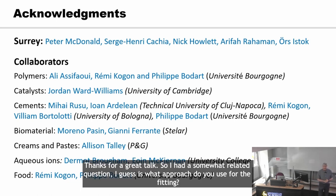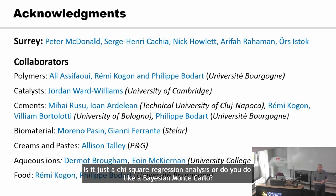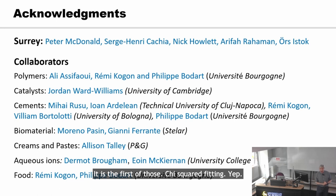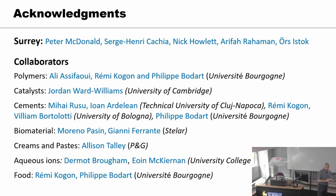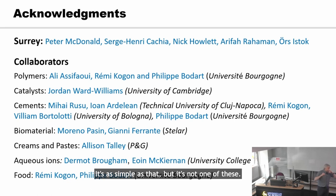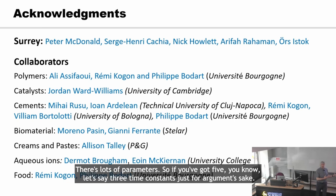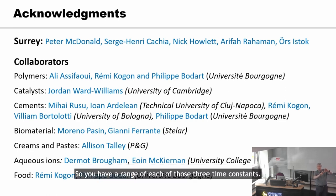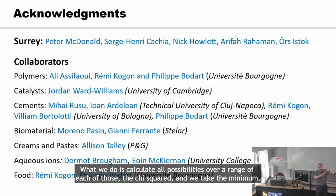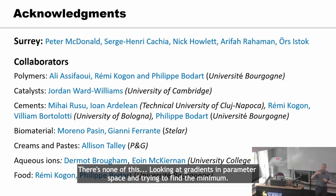Question: Thanks for the great talk. What approach do you use for the fitting — is it just a chi-square regression analysis or something like Bayesian Monte Carlo? It's chi-square fitting, yes. But there are lots of parameters — say three time constants. We have a range of each, calculate chi-squared over all possibilities across that range, and take the minimum. There's none of this looking at gradients in parameter space trying to find the minimum.